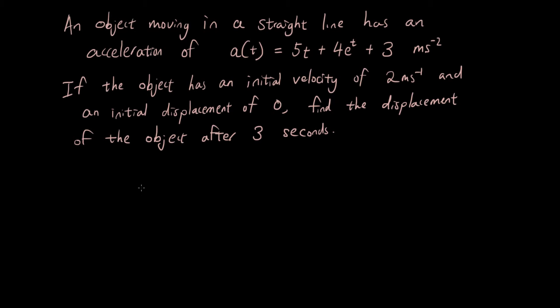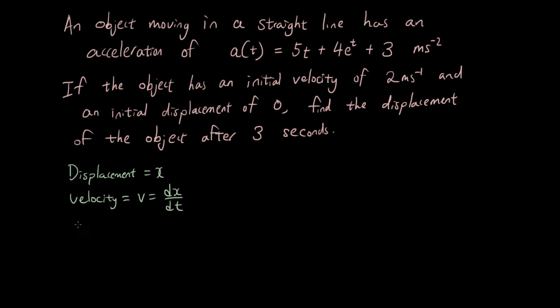Before we start, some prerequisite knowledge you should already know: if we represent the displacement of an object with the symbol x, then velocity v equals the derivative of x, so it's dx over dt. And acceleration a equals dv over dt, or the second derivative of x.